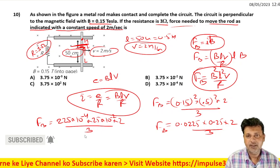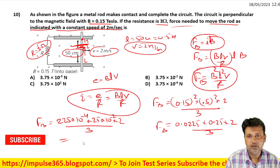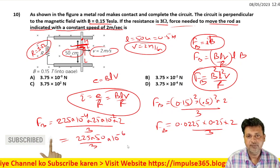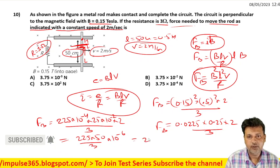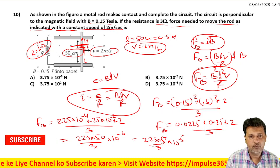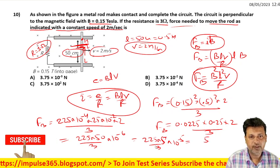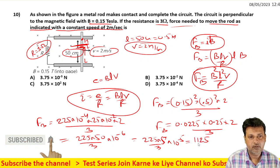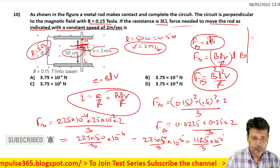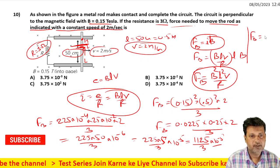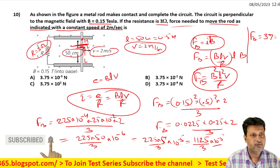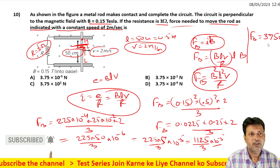This becomes 2.5 times 5 by 3 times 10 to power minus 5. This gives 25 by 3 times 10 to power minus 5. 25 by 3 gives approximately 8.33, so the force value is 3.75 times 10 to power minus 5.